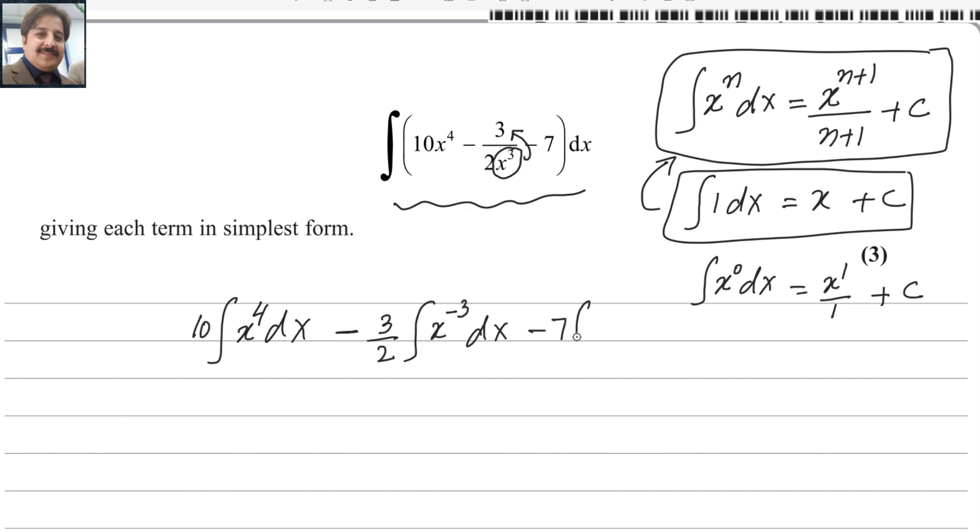And minus 7 will be outside of the bracket. You can keep 1 inside the integral, so dx. This could be written like that in the next step.